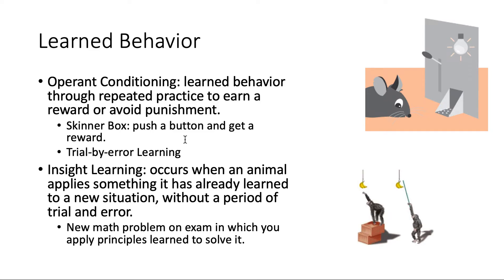Then you have insight learning — it's a little bit more complex. It occurs when an animal applies something it has already learned to a new situation without a period of trial and error. Here you have a chimpanzee with bananas hanging up that it can't reach, so it builds a platform in order to reach them. A human example is a new math problem on a test — you use the old principles of how to solve that type of problem and apply it to get the answer. Insight learning is bringing prior knowledge into a new behavior.